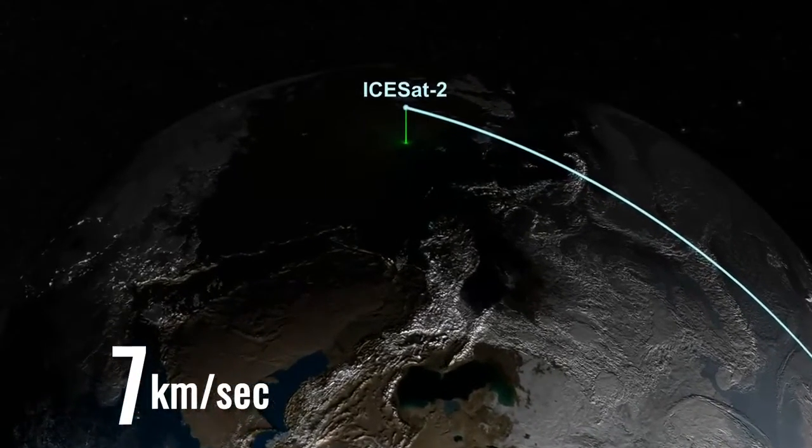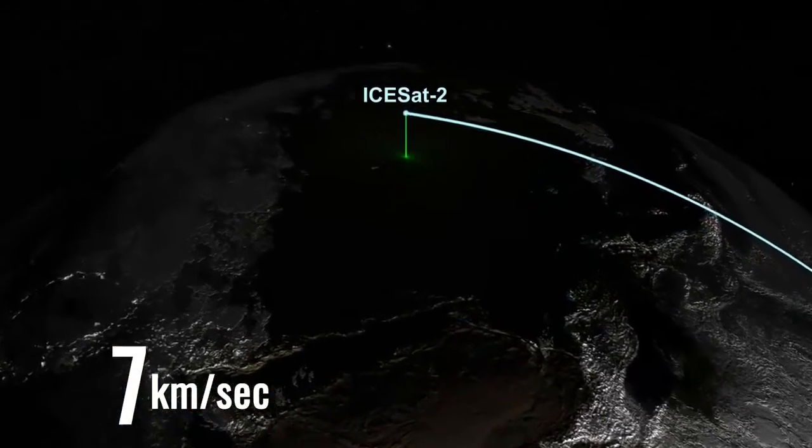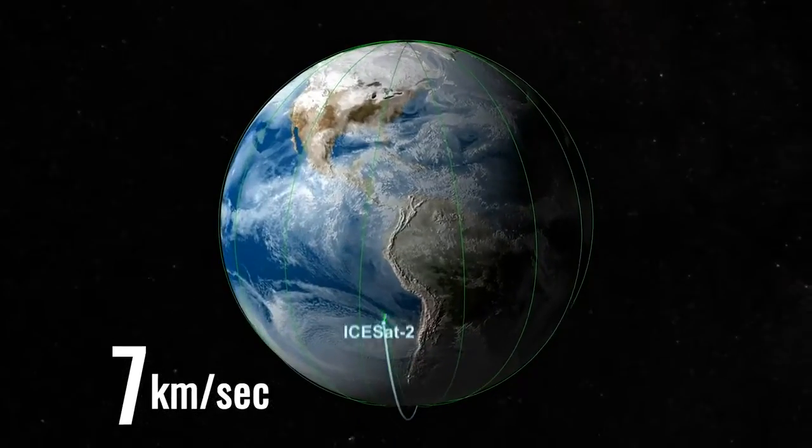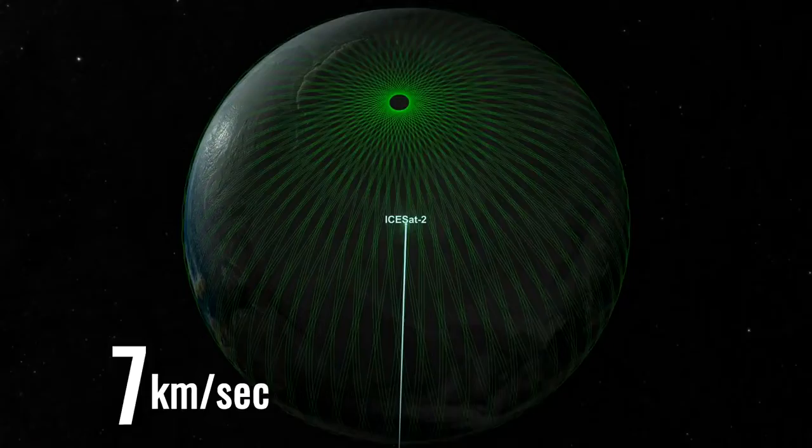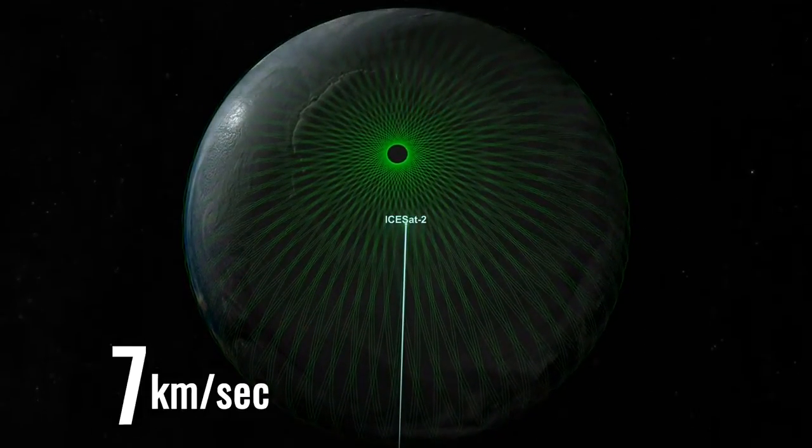Seven kilometers per second is how fast ICESat-2 will zoom above the planet. It'll complete an orbit around Earth in 90 minutes. The orbits will converge around the poles, focusing the data in the regions with the most expected change.